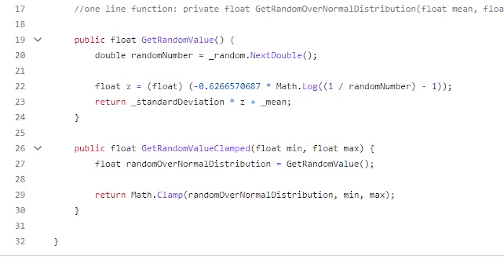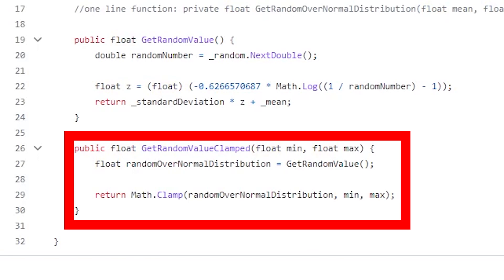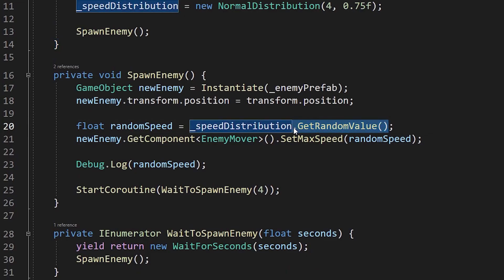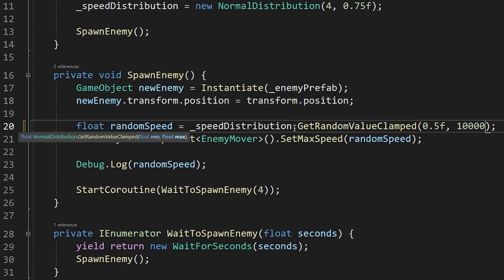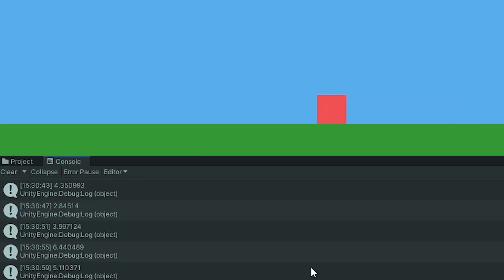With the second implementation, I have a function in the normal distribution class that does just that called get random value clamped. Let's change to that here and put 0.5 in for the min and like 10,000 for the max. Everything works pretty much identically, but now we have peace of mind that everything won't break if we get insanely unlucky.